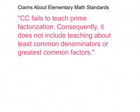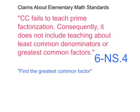Common Core fails to teach prime factorization. Consequently, it does not include teaching about least common denominators or greatest common factors. Wrong. Page 42 — you can see right there — find the greatest common factor and least common multiple of two whole numbers.